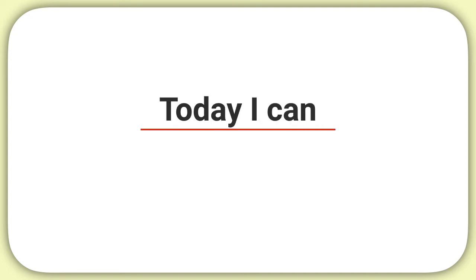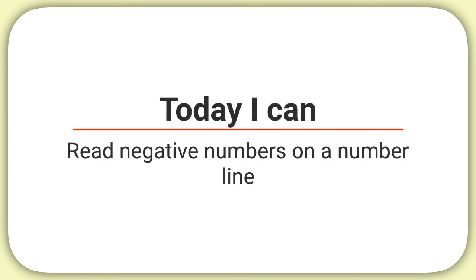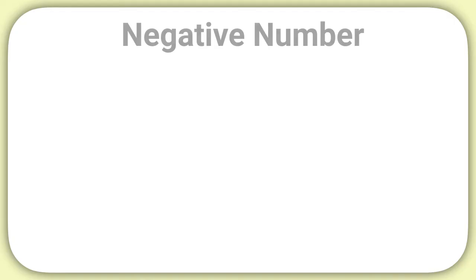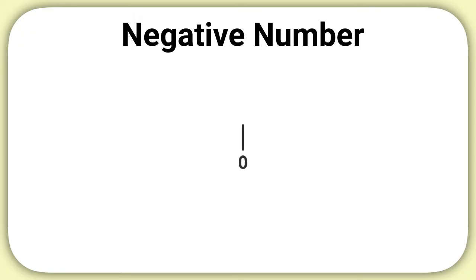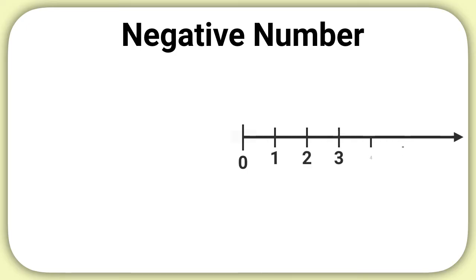Today we are learning how to read negative numbers on a number line. Let's talk about negative numbers. You're probably used to a number line starting here at 0, then it moves forwards, with numbers like 1, 2, 3, and so on.